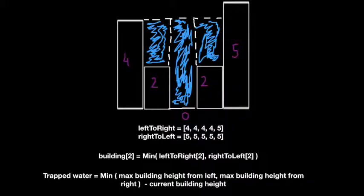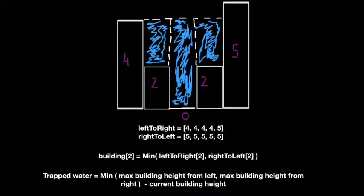Now move from right to left, from building 5 to building 4. When you are at building 5, then 0, then 4, the maximum height so far is 5. Imagine yourself standing on the ground at 0 — you look left and see a maximum height of 4, and to your right a maximum height of 5. You take the minimum of both and calculate the total trapped water.